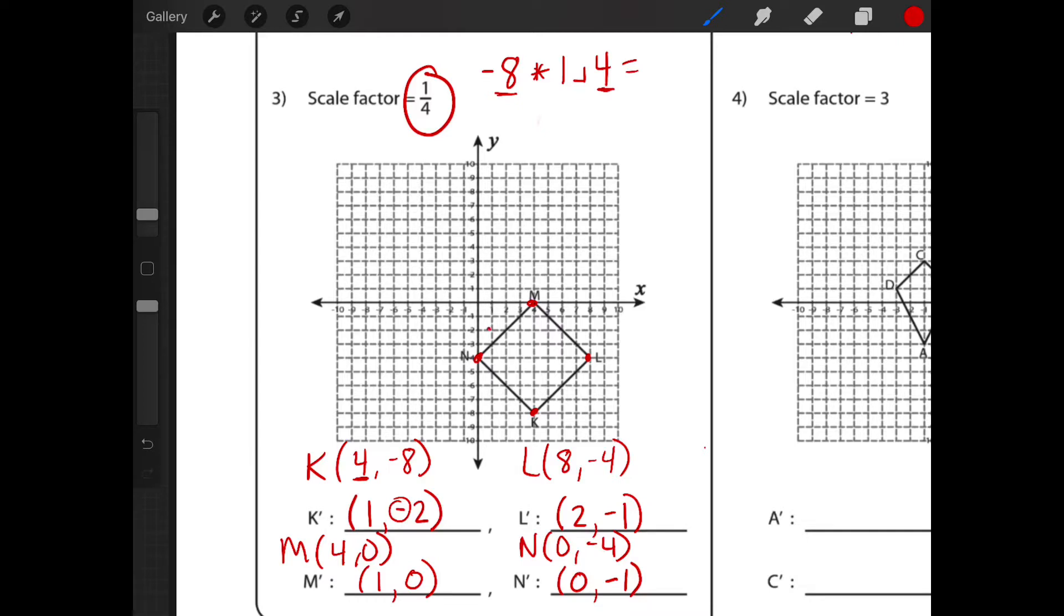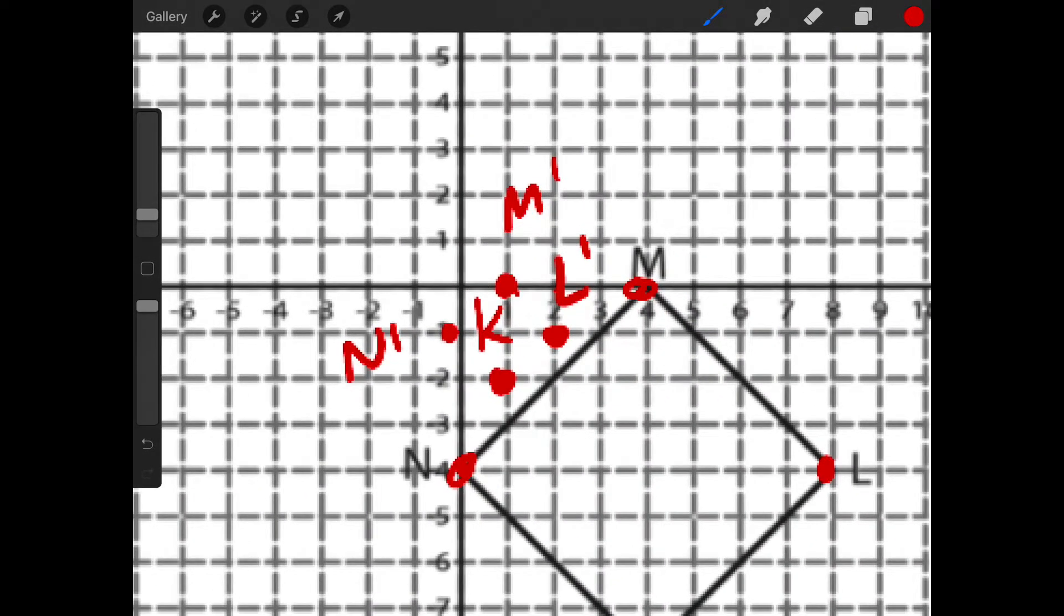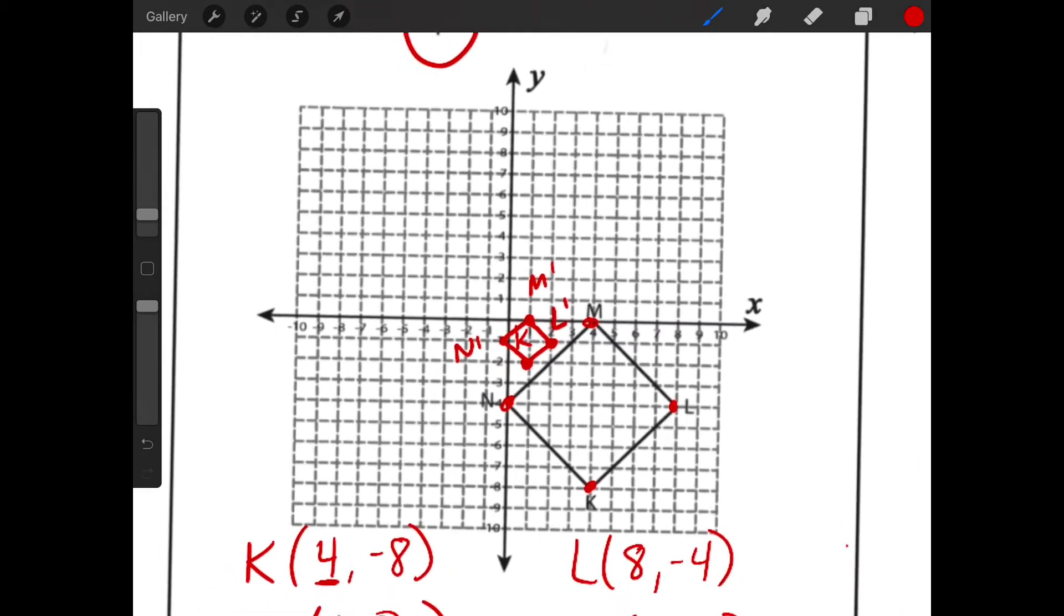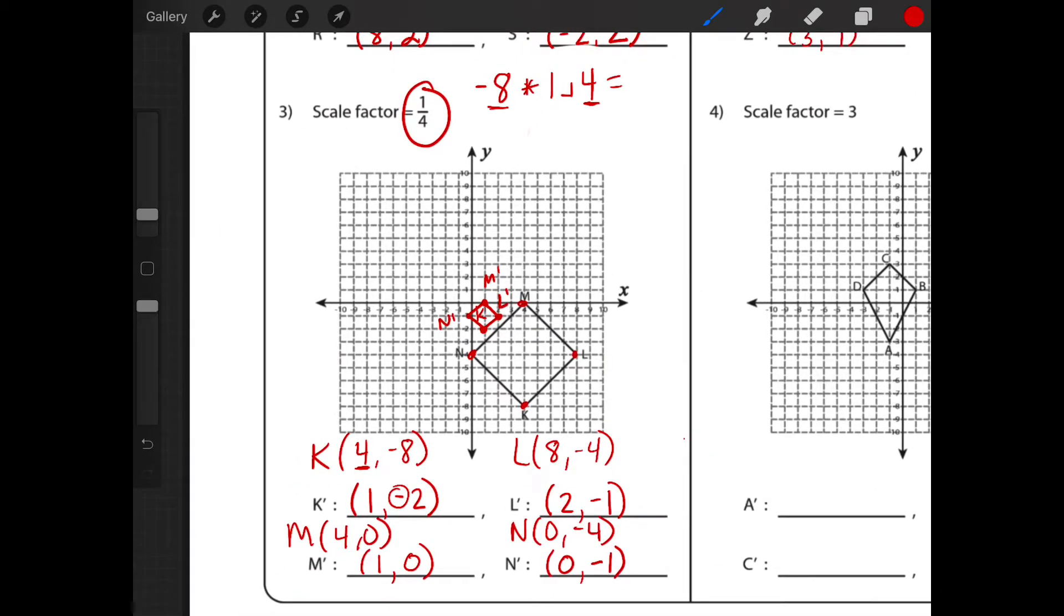So let's go ahead and plot that now. So our first one is over one down two. And that's our K prime. Our next one is eight over two down one. And that's our L prime. Next one is over one zero. And that's our M prime. And the last one is zero negative one. So that's our N prime. Now this is really hard to see. But here is my new image. And it is extremely small because it is a quarter. It's a fourth of what it used to be.